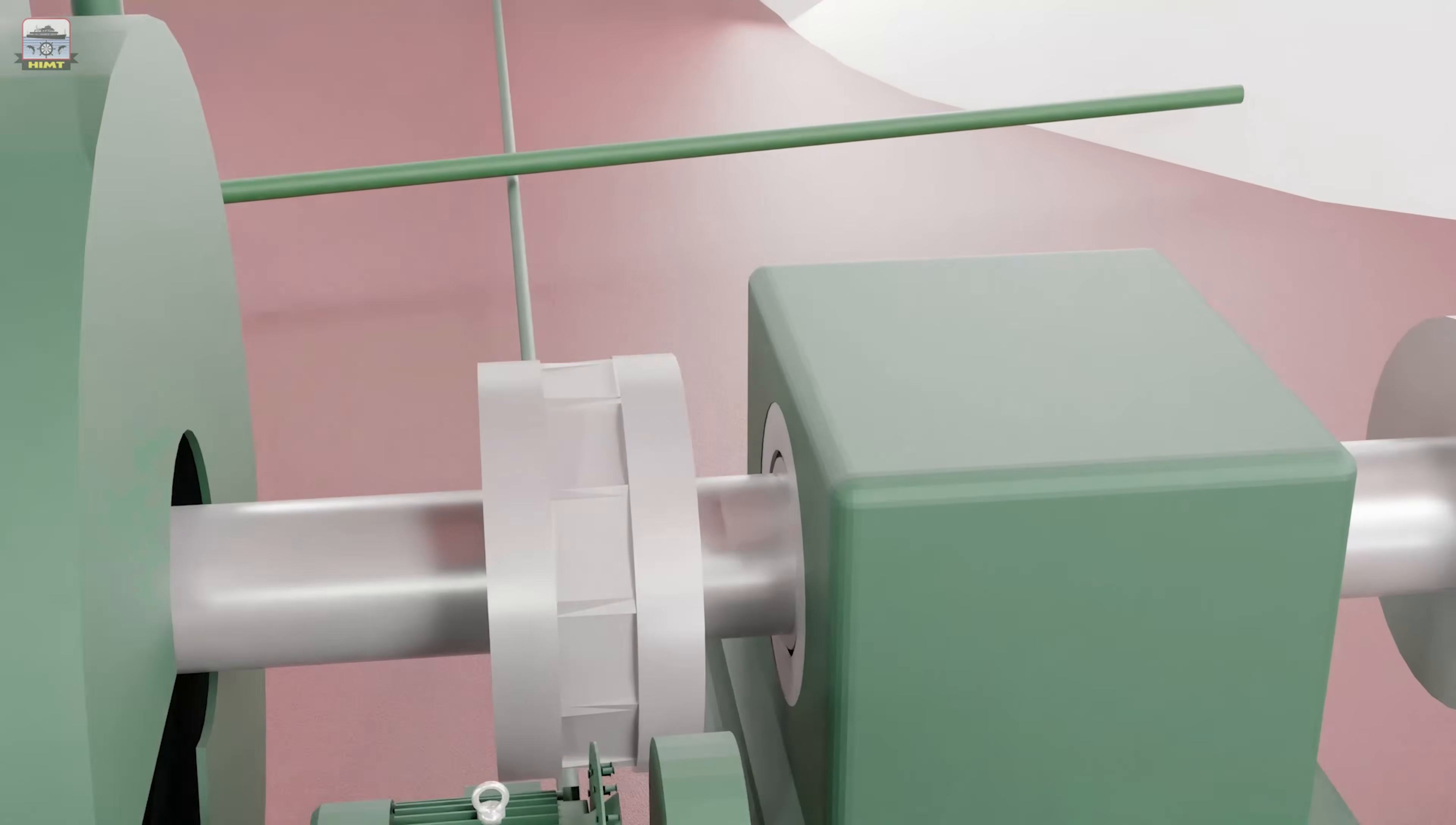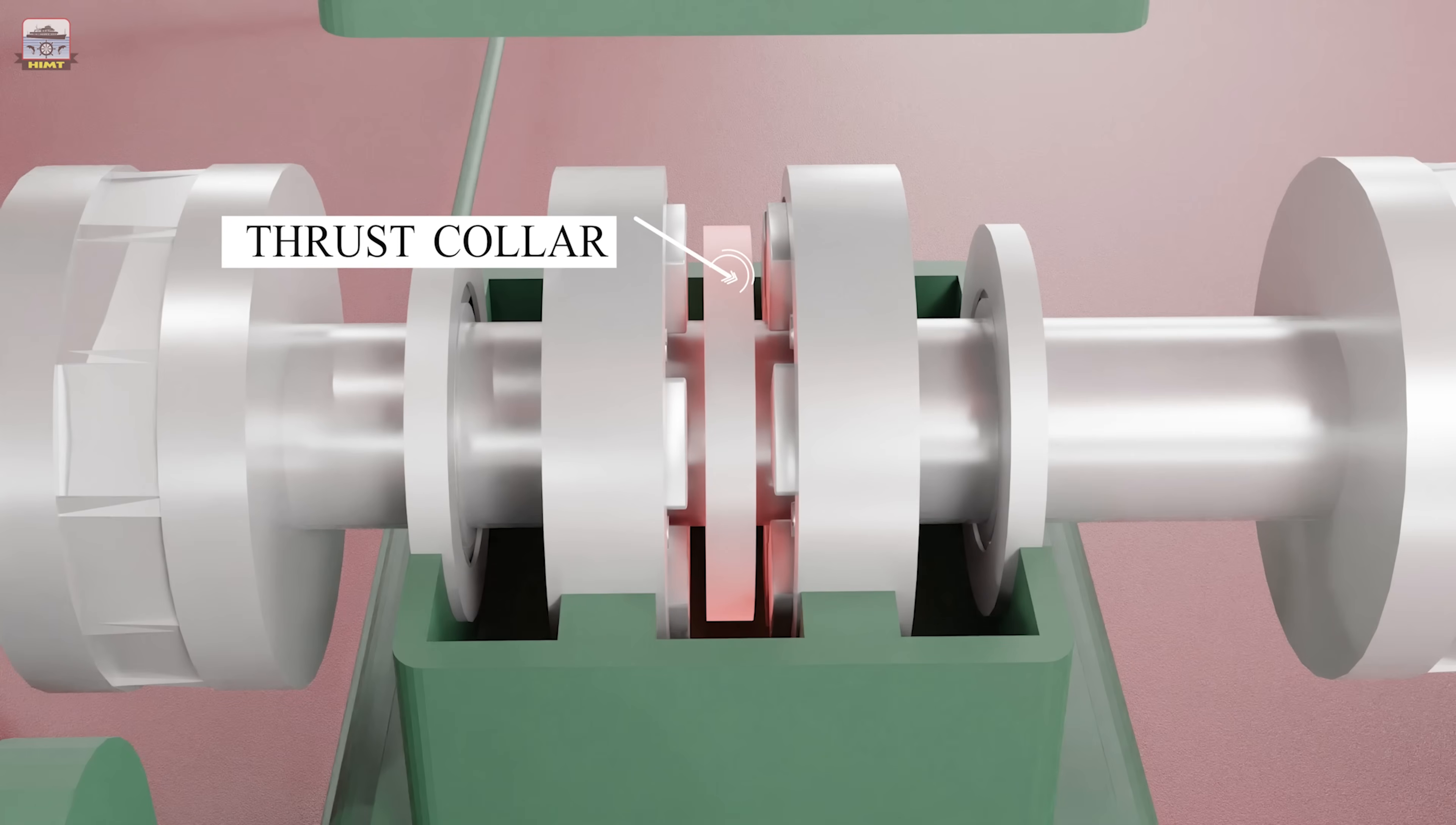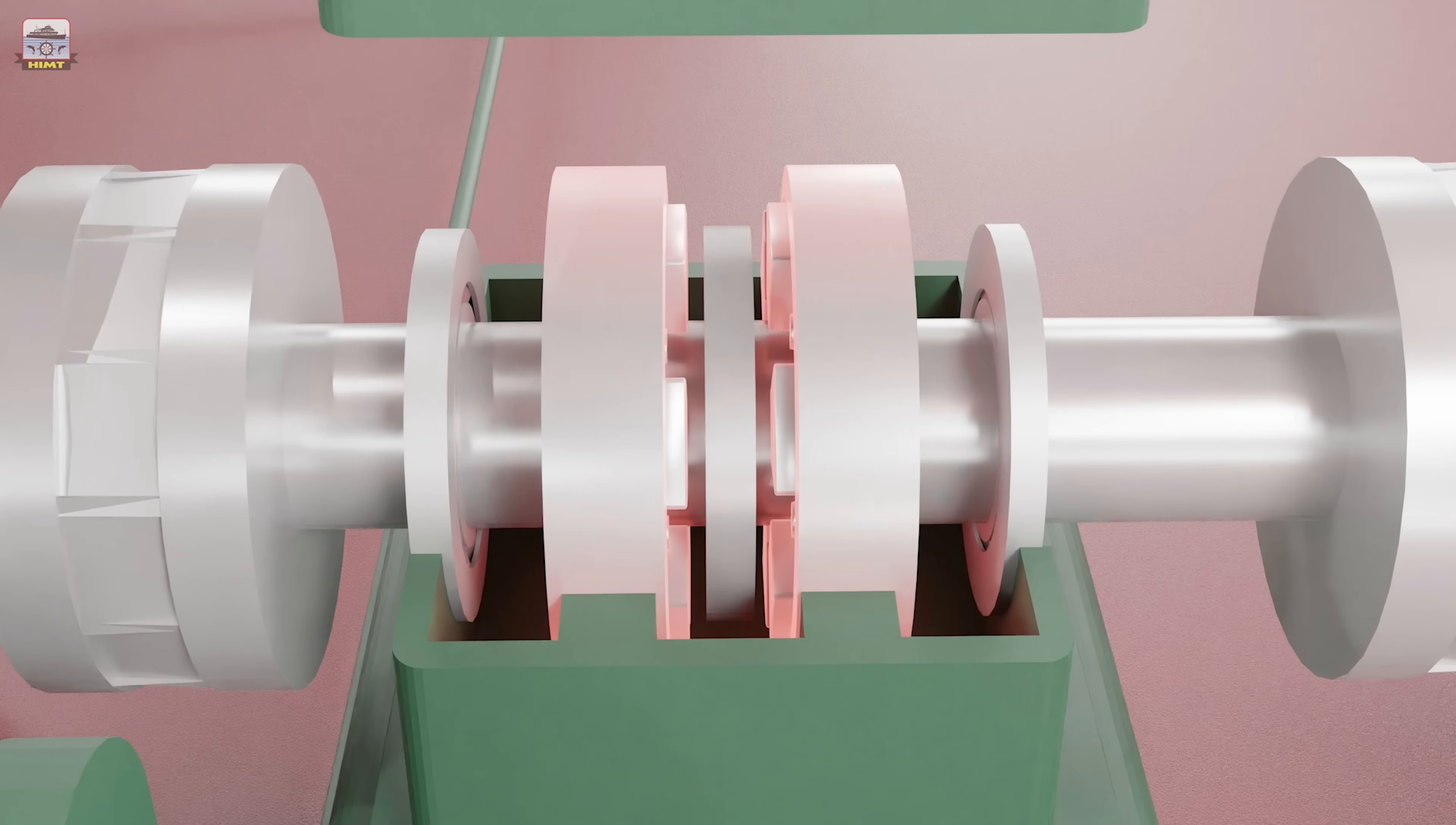The thrust bearing is located in the aft side of the main engine to transmit the propeller thrust from the shafting to the hull structure. The thrust bearing consists of a thrust collar on the thrust shaft and thrust pads. The propeller thrust is transferred through the thrust collar, the thrust pads, the thrust bearing housing, the fitted bolts, the foundation, to the hull structure.